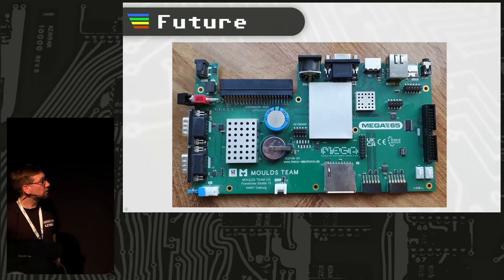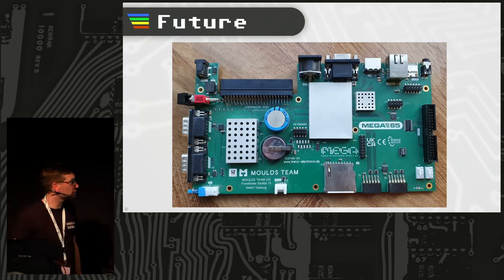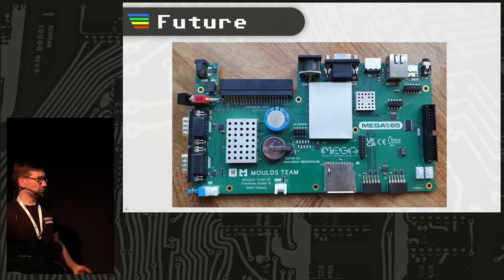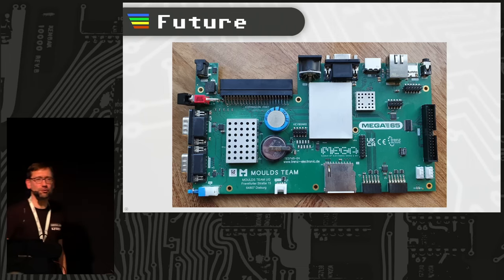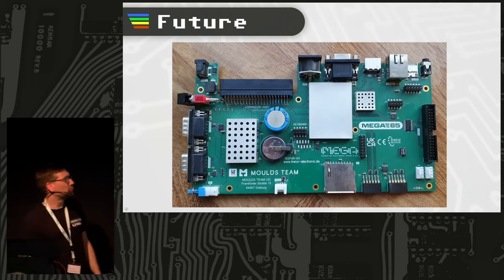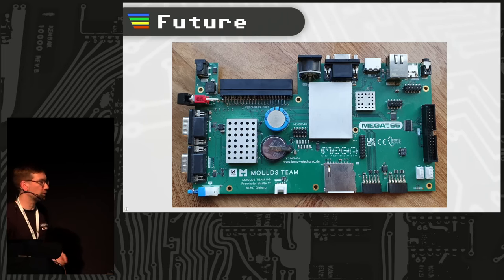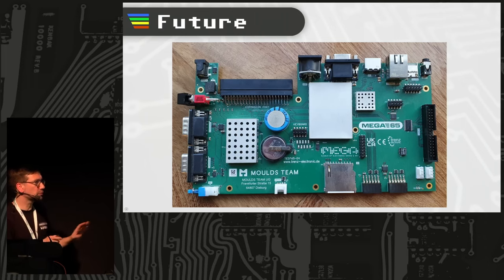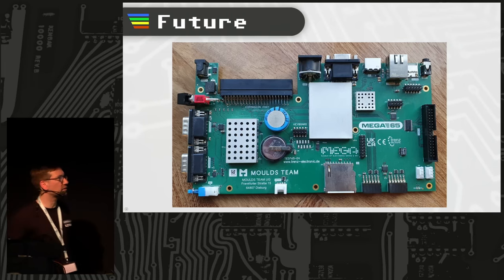We don't stop where we were — we keep developing. This is the R4 board, already somewhat old. I hope in a few weeks we'll have the R5 board. Why a new board revision? The R3 board had problems users discovered, for example an HDMI back-power problem — we're in good company there, the ZX Spectrum Next first revision had the same issue. Essentially more power from the monitor flows into the FPGA and causes weird behavior. The new board has protection for that.